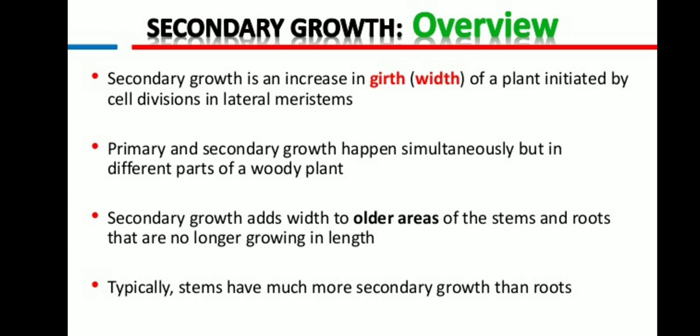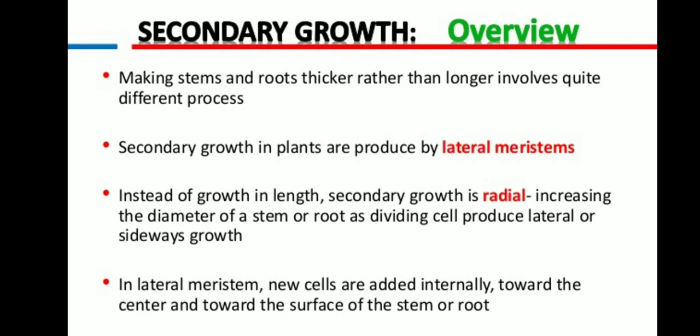Secondary growth adds width to the older areas of the stem and the root that are no longer growing in length. Typically, stems have much more secondary growth than the roots. This makes the stem and roots thicker rather than longer, which involves a quite different process. Secondary growth in plants is produced by the lateral meristem because of the activity of the lateral meristem.